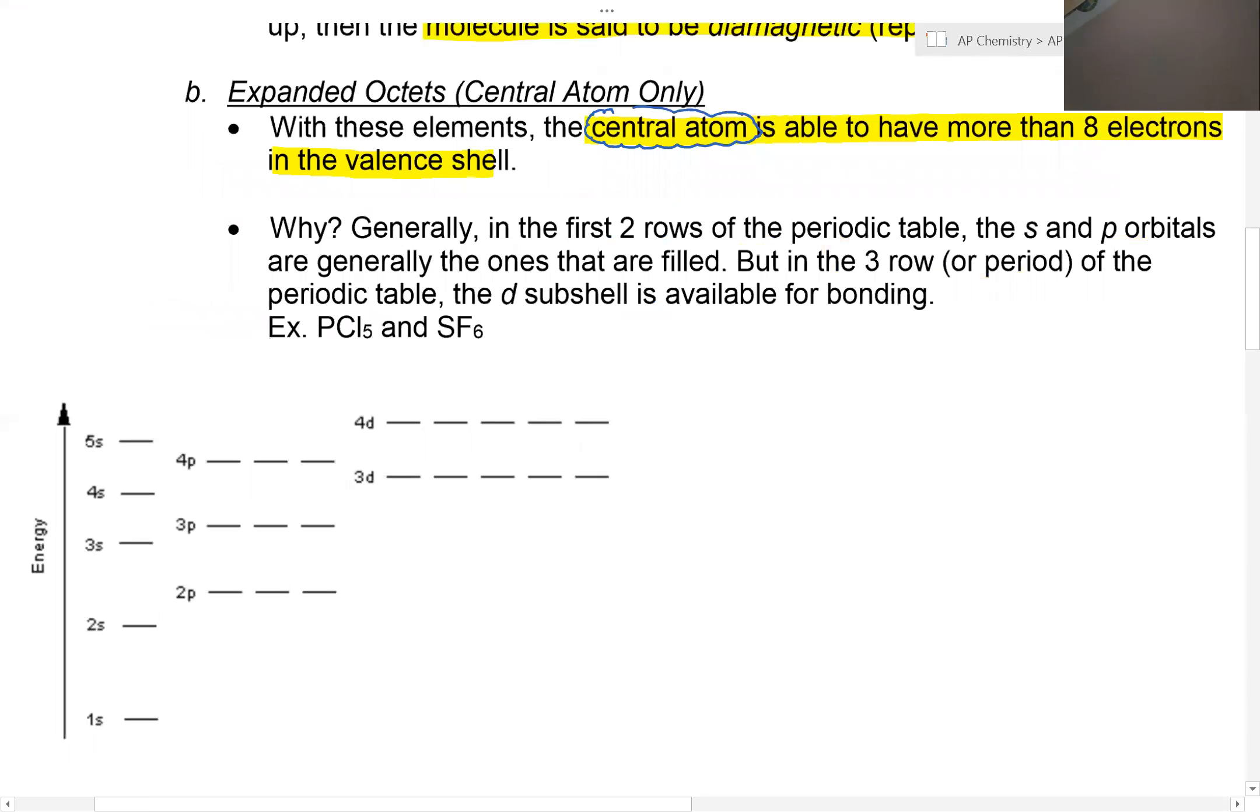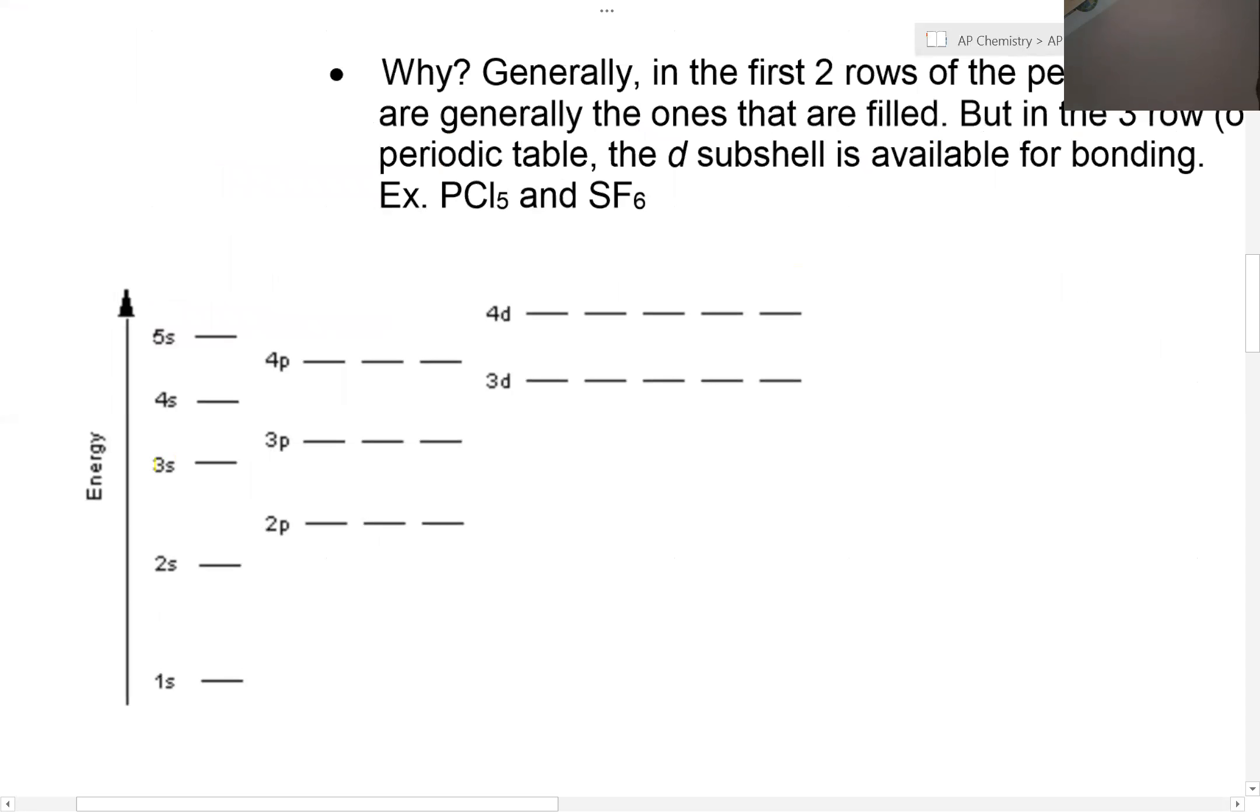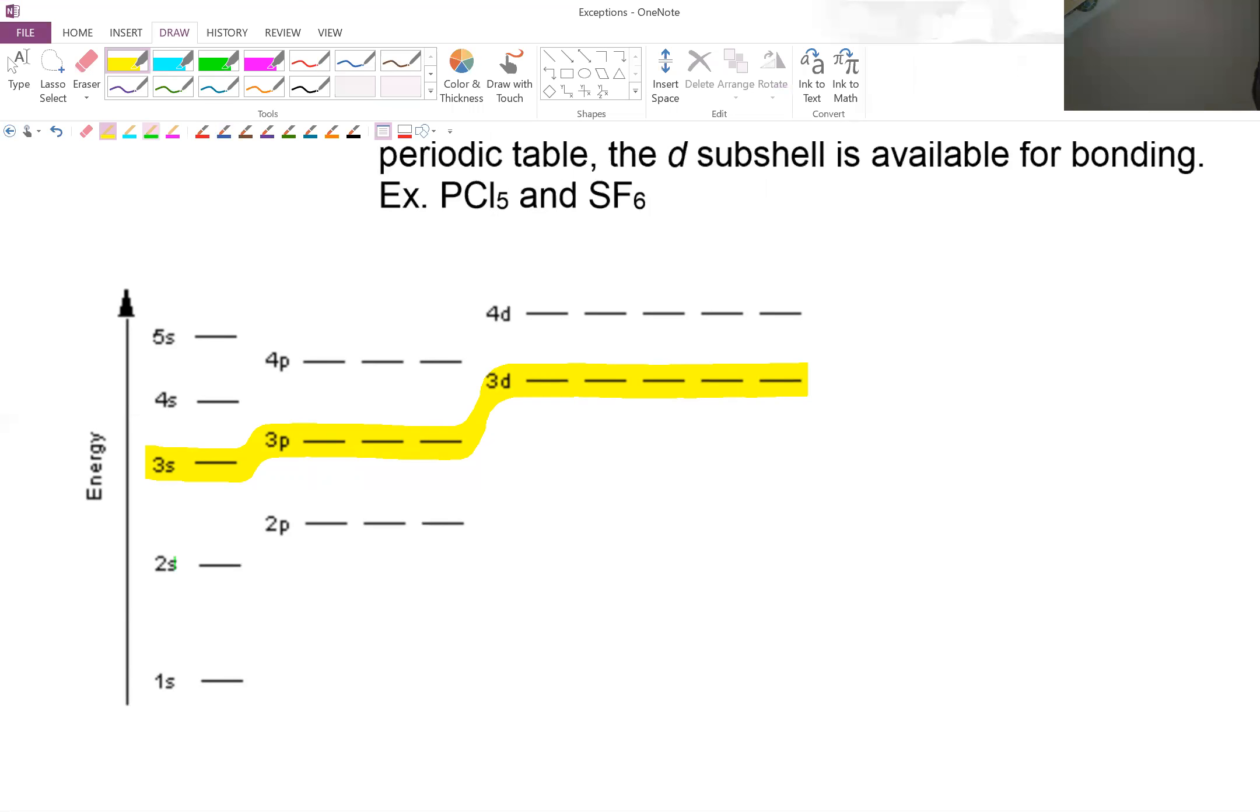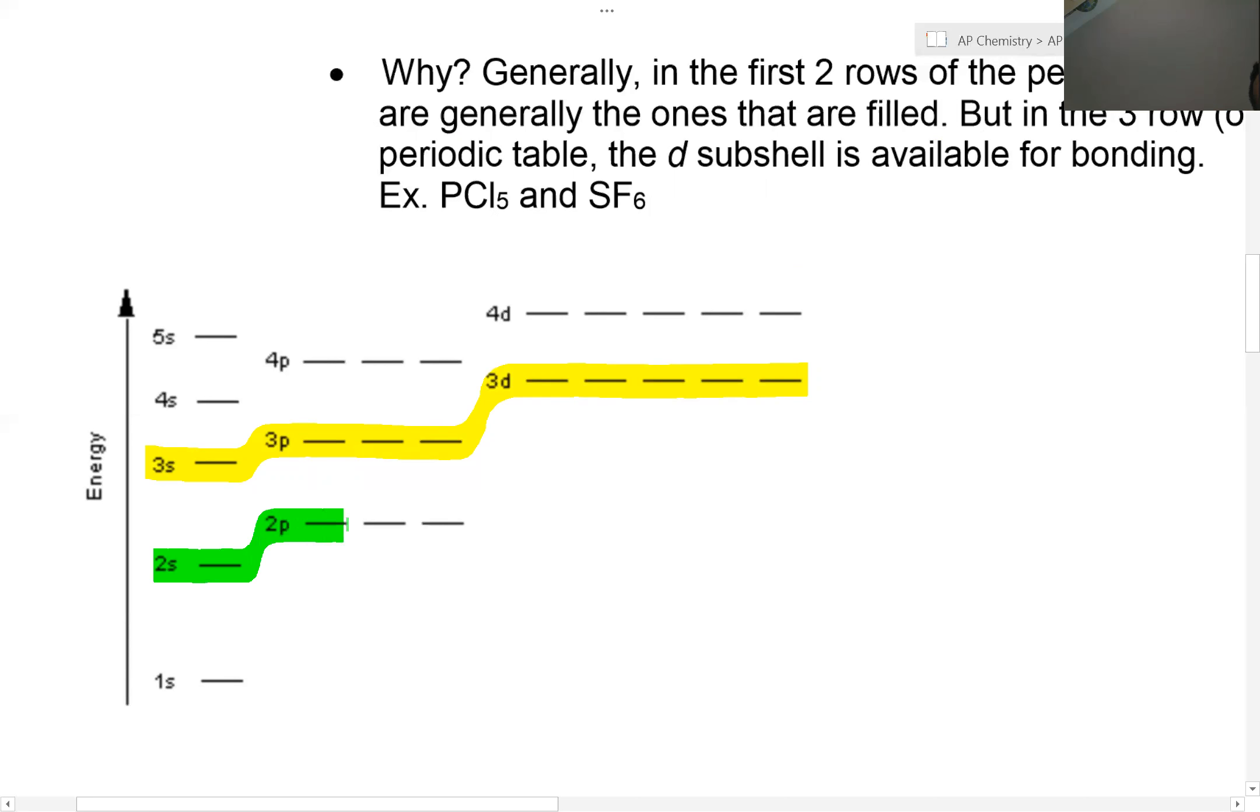Going back to orbital diagrams, in the third energy level, notice there's 3S, 3P, and also 3D. Because the D orbital is available for bonding, you're allowed to have an expanded octet. Elements in the second period, if they are the central atom, notice can only have the 2S and the 2P. So here you have a max of eight electrons if central atom.